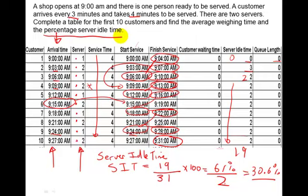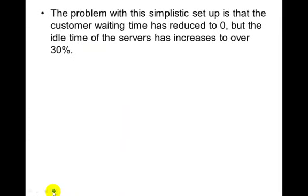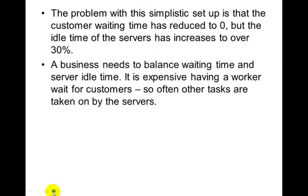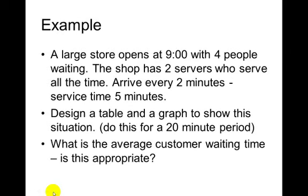The average waiting time is zero because all customer waiting times are zero — no waiting at all. So this seems good for the customer but not very good for the business. The problem with this simplistic setup is the customer waiting time is reduced to zero, but the server idle time is 30%. Business needs to balance waiting time and server idle time — you don't want customers waiting too long, but you also don't want to pay workers for doing nothing.